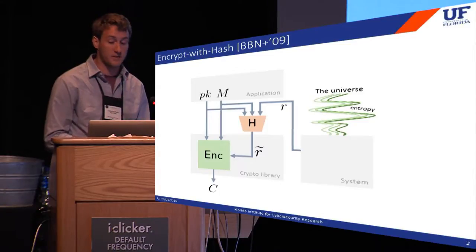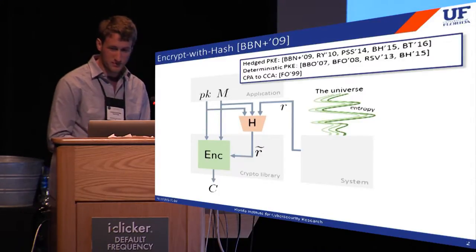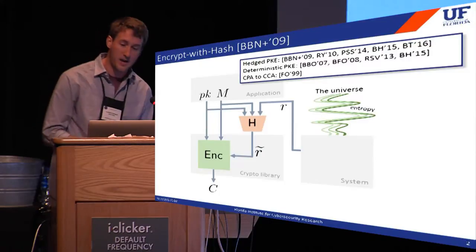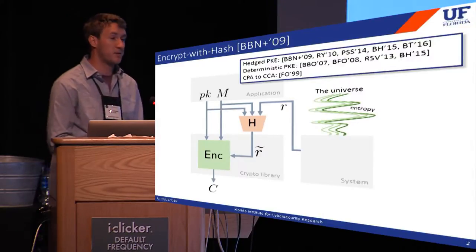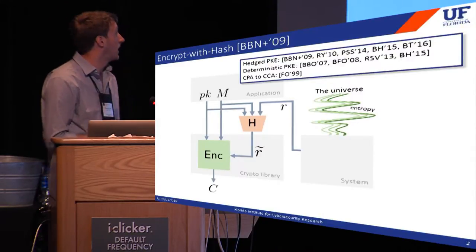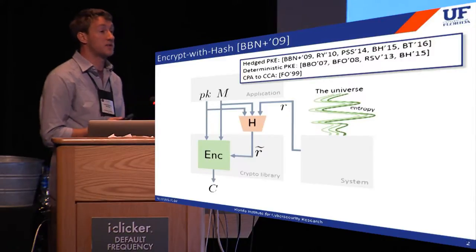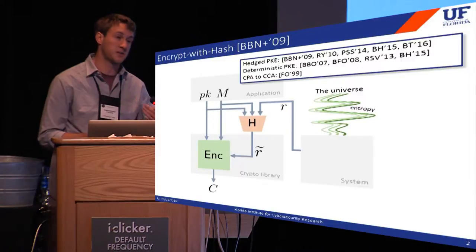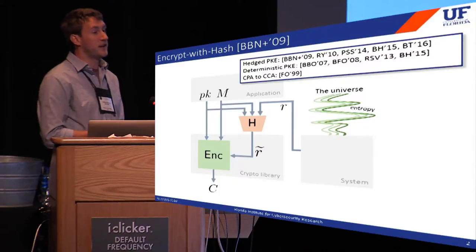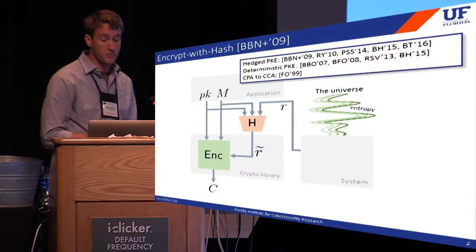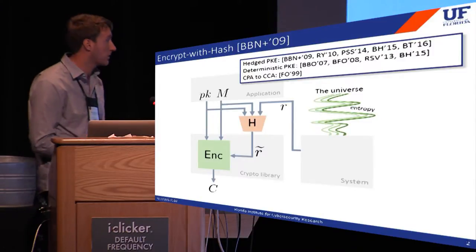In the random oracle model, unless the adversary is able to guess both the message and randomness, the synthesized coins can be treated as uniform. This trick, which in this talk I'll call Encrypt with Hash, has been adapted to a wide variety of settings. There are a number of papers that deal with encryption in the presence of imperfect randomness, and in many of these, some instantiation of this trick is proposed as a defense. It's also used in the context of deterministic encryption, where no randomness is used at all and we rely just on the entropy in the message. In fact, the idea of synthesizing coins for encryption was used at least as early as 1999 by Fujisaki and Okamoto, who used it as part of a transform from CPA to CCA security.